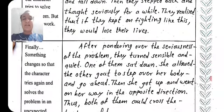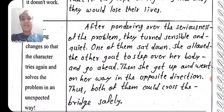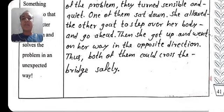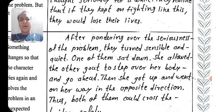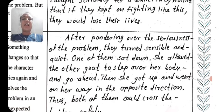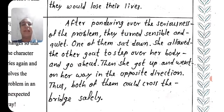They realized that if they kept on fighting like this they would lose their lives. What happened then? Finally something changes so that the character tries again and solves the problem in an unexpected way. After pondering over the seriousness of the problem, they turned sensible and quiet. One of them sat down and allowed the other goat to step over her body and go ahead. Then she got up and went on her way in the opposite direction. Thus both of them could cross the bridge safely.